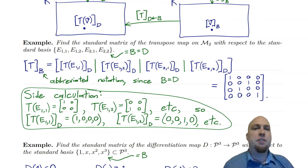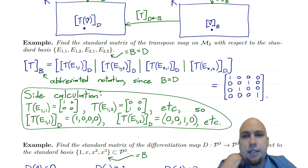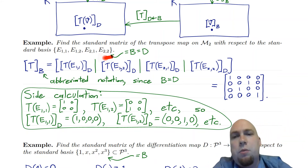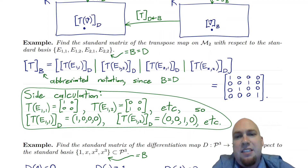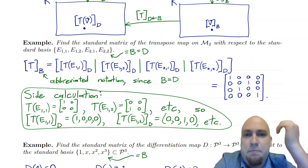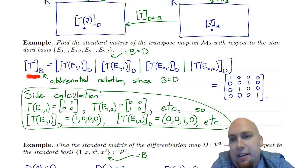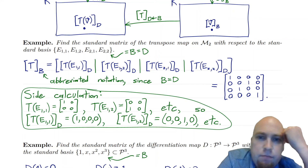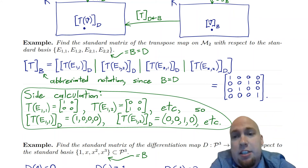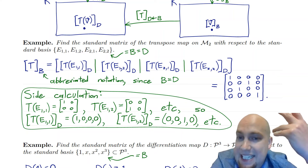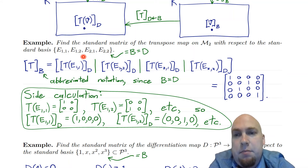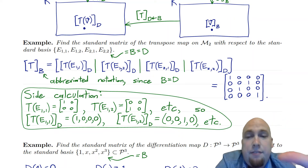Let's look at some concrete examples to get a better feel for how this works. As our first example, consider the transposition map on M2 — the map that transposes a two-by-two matrix. To construct standard matrices you need a basis, so let's work with the standard basis of M2. This basis will serve as both the input basis B and the output basis D. When the input and output bases are the same, I'll abbreviate the notation to just the standard matrix with respect to B — just one subscript since they're both the same. To construct it, go back to the definition: plug the input basis vectors into the linear transformation and represent them in the output basis.